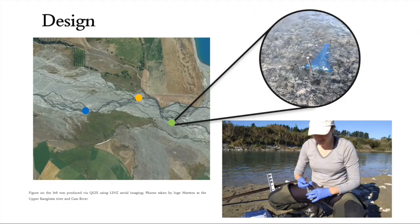I started on the Cass and chose three main locations within the main braid: site one in blue, site two in orange, and site three in green. Within each site I placed four replicates of eDNA filters that stay in for 24 hours. The next day I collect the filters, add a preservative, and continue with fieldwork. We also collected kick net samples up to 2 km from our eDNA locations to compare conventional methods with eDNA, aiming to estimate species richness at the broader landscape scale.